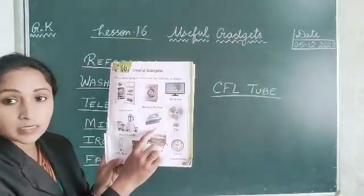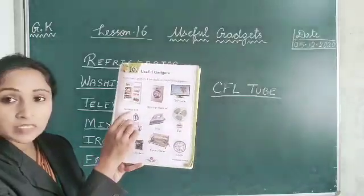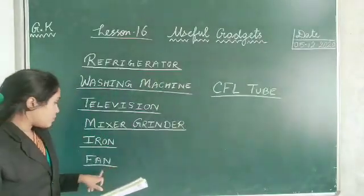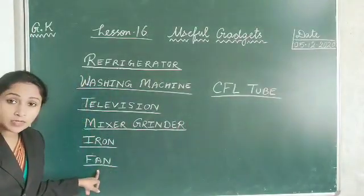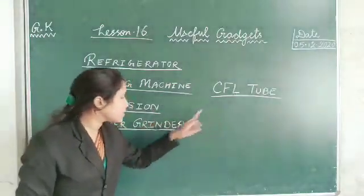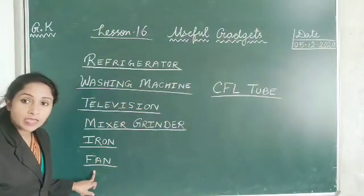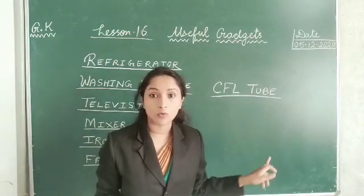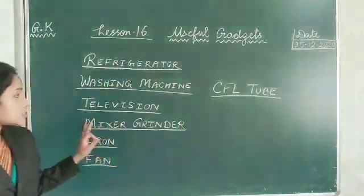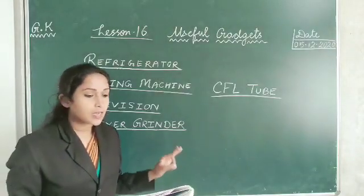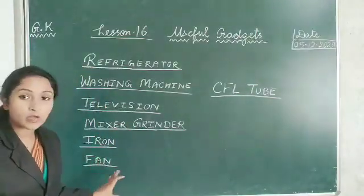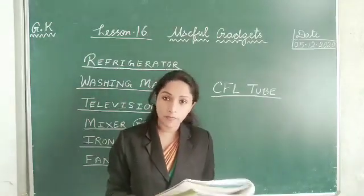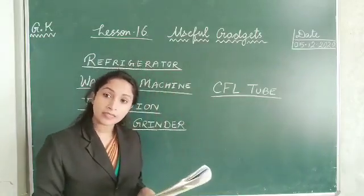This is fan, iron, mixer grinder, refrigerator, washing machine, television. So two words we had learned today: fan and CFL tube. Spelling of fan: F-A-N. Spelling of CFL tube: C-F-L tube. So dear students, you have to learn lesson 16. These words you have to learn and you have to read your book also, page number 41. Thank you.